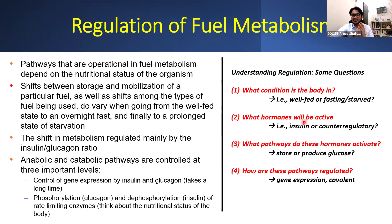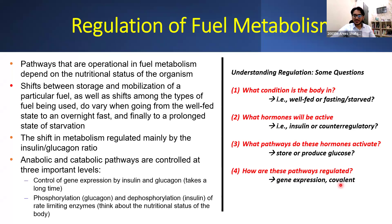Insulin in general activates enzymes by dephosphorylation or at the gene level. The dephosphorylation effect is quicker; the gene expression effect is slower. Regardless of its mechanism, insulin works to store glucose — the glucose goes into cells and is stored as glycogen or is made into triglycerides or fatty acids. Then how are these pathways regulated? Insulin regulates pathways at the gene level or by dephosphorylation.